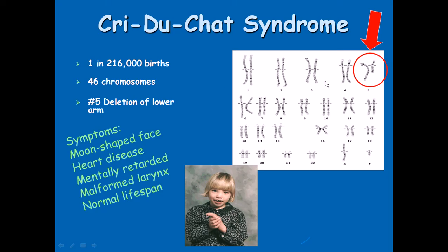The second syndrome is Cri du Chat syndrome. This is a condition where chromosome number 5 — an autosome — has a slight deletion of the lower arm. Due to this deletion, it produces a moon-shaped face, causes heart disease from a very young age, mental retardation, and a malformed larynx. Normal lifespan is expected, but mental retardation persists. It happens in one in 216,000 births. The individual produces a very high-pitched cry that sounds like a cat crying — that's why it's called Cri du Chat, meaning 'cry of the cat' syndrome.